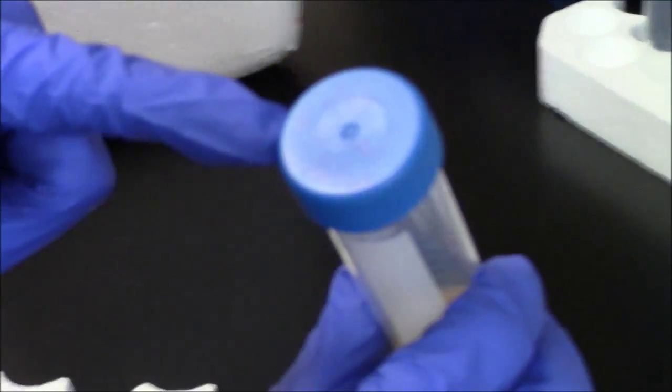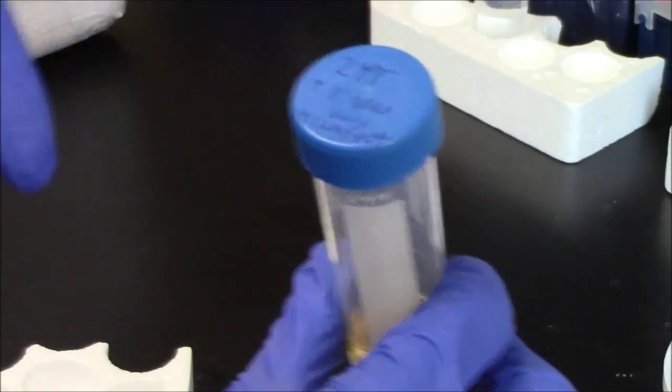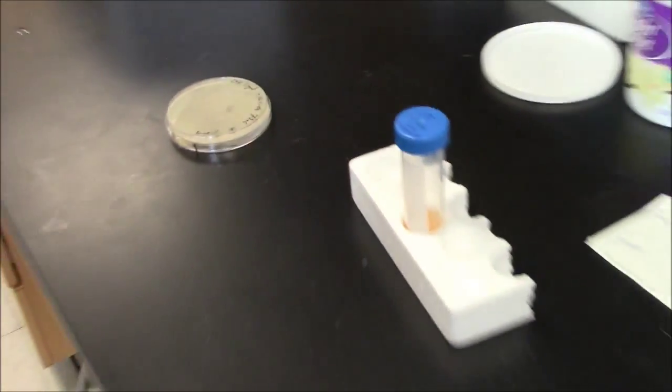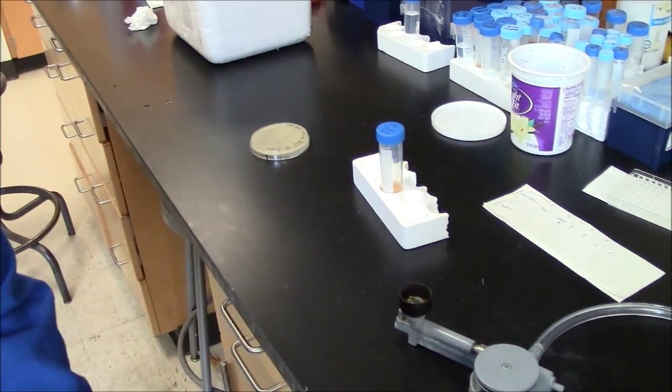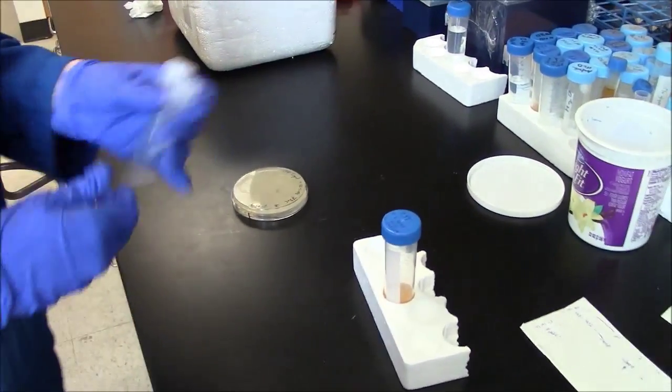To grow up the cells, you'll need some media. Here we're using 2YT with some antibiotics. The cells that have the phage mid-DNA will be resistant to these antibiotics, and therefore we're selecting for only cells that carry that DNA.